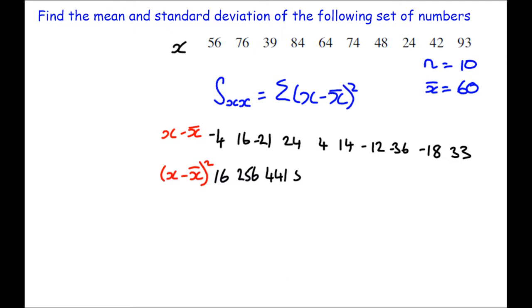4 squared is 16. 14 squared is 196. Negative 12 squared is 144.